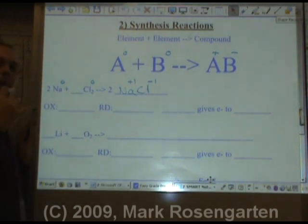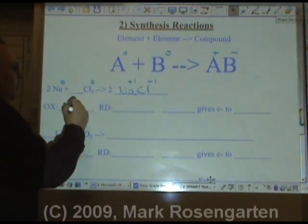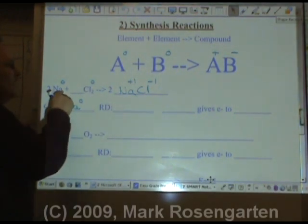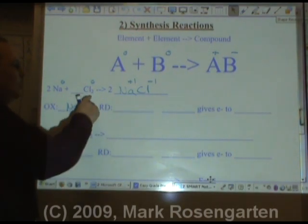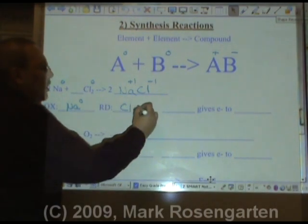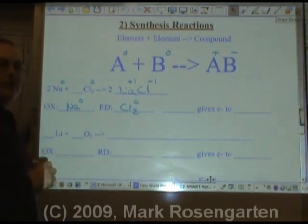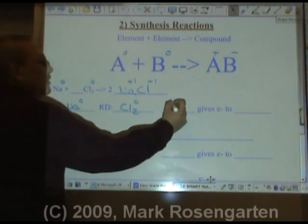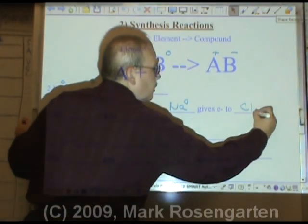Oxidized means to go more positive in charge by losing electrons. Sodium goes from zero to plus one. Therefore, sodium zero lost its valence electrons to become plus one. Reduced, chlorine went from zero to minus one. So each charge was reduced to a negative value. Which means that the sodium, which lost electrons, gave them to the chlorine.